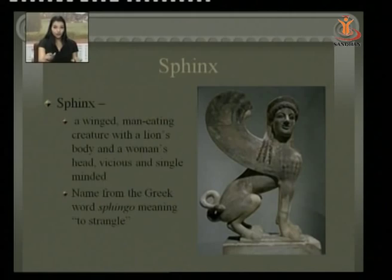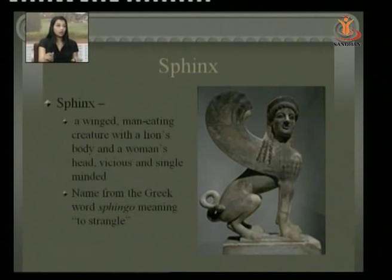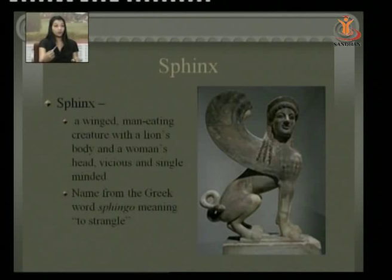The Sphinx was a winged, man-eating creature with a lion's body and a woman's head. It was vicious and single-minded. The name comes from the Greek word 'sphingo,' meaning 'to strangle.' In the picture you can see the face of a female with the body of a lion and wings.